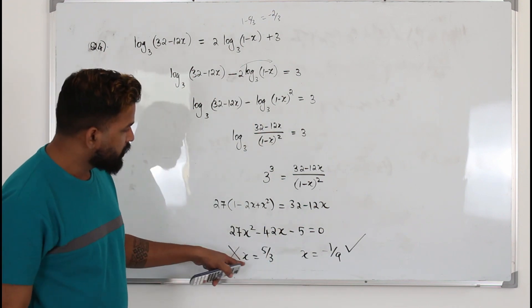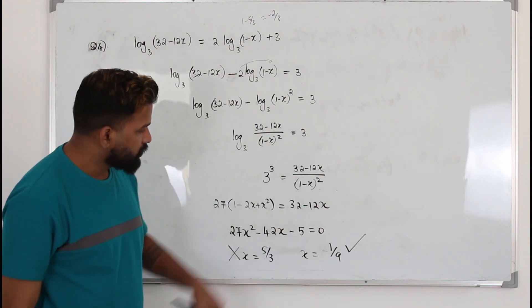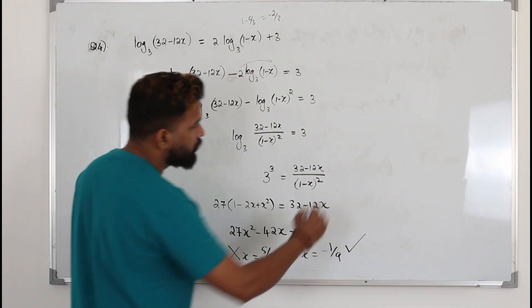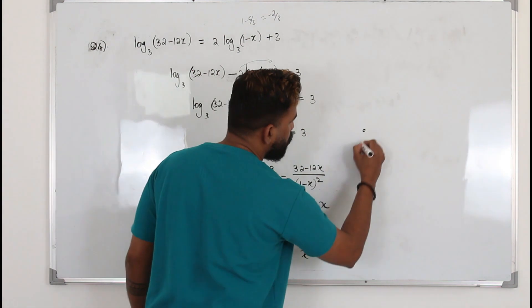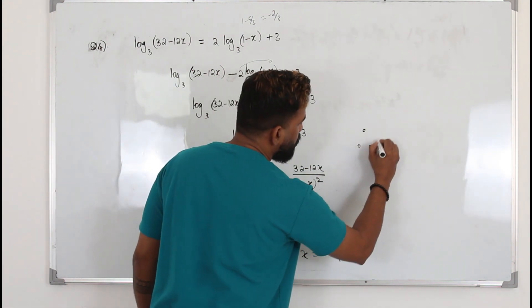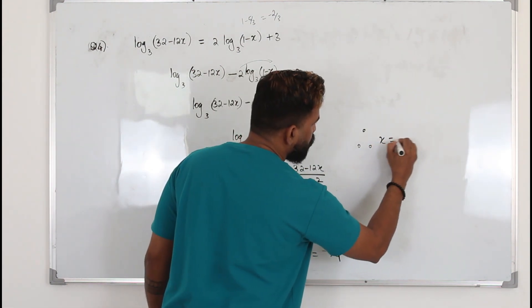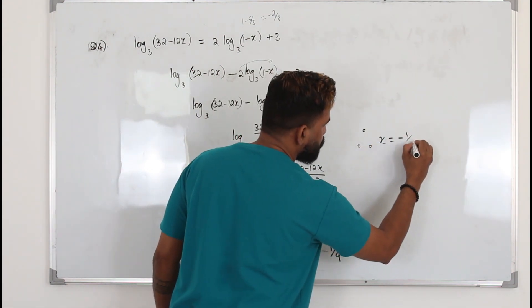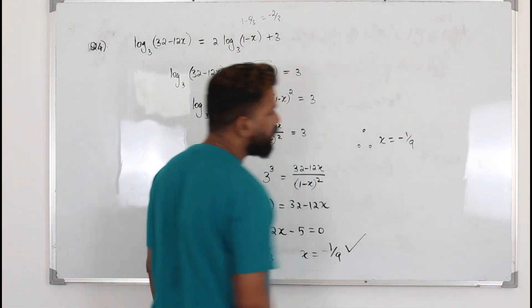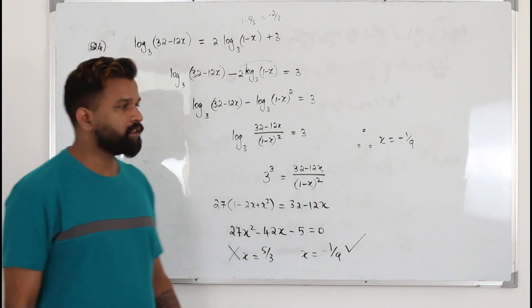So for every question involving a logarithmic function, once you get the x values, plug them back into the original equation to find the right solution. In this case, therefore, x equals negative 1 over 9. That's the solution.